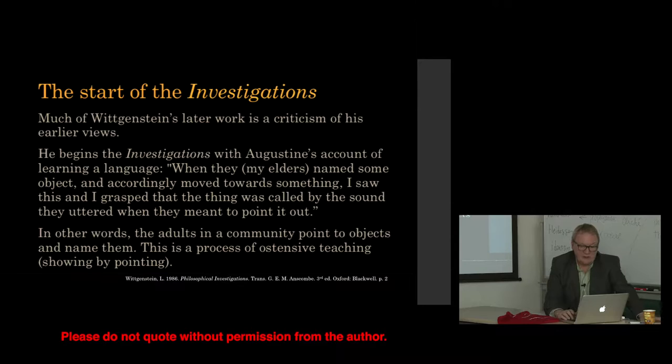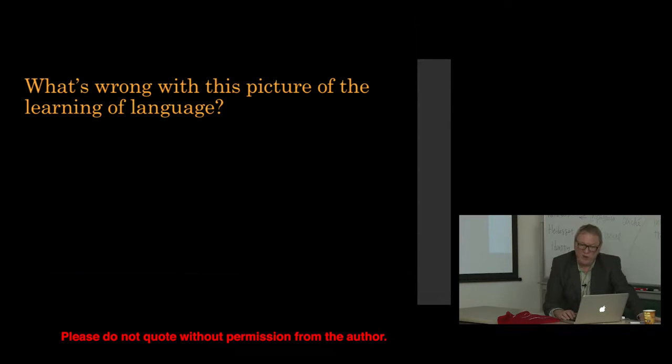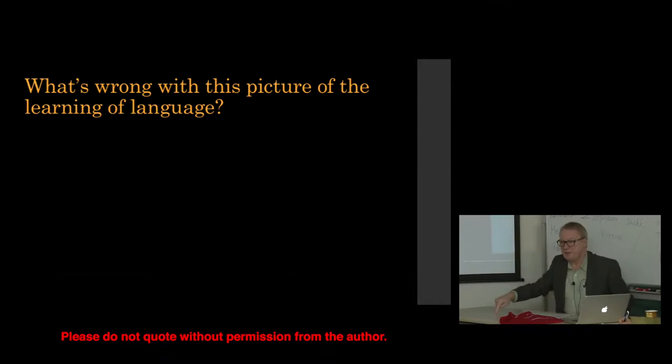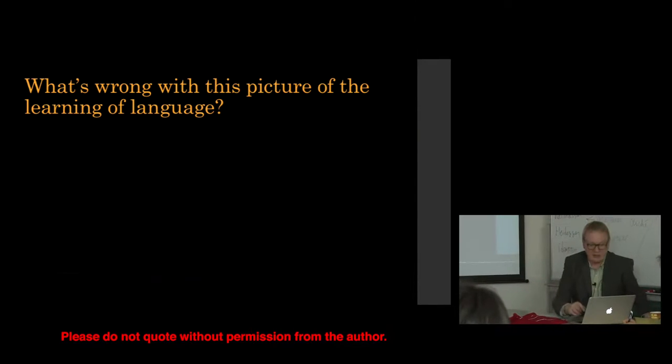Now, in other words, the adults in the community - the community could be the family, it could be something looser and larger - the adults point to objects and name them. This is a process of ostensive definition. And ostention means showing by pointing, ostensive teaching rather. So what's wrong with the picture of learning, the learning of language which we've just considered, which Augustine presents? The teacher, the adult, points - screen, table, chair - and the learner picks up those words. What's wrong with that?